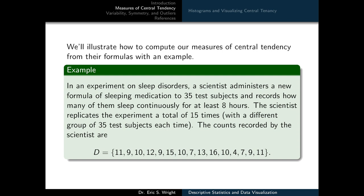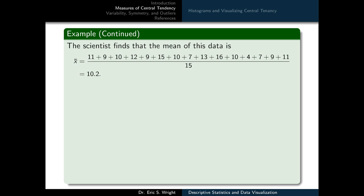We'll illustrate these measures with an example. In a sleep disorder experiment, a scientist administers sleeping medication to 35 test subjects and records how many sleep continuously for at least 8 hours, replicating the experiment 15 times. The dataset is d equals 11, 9, 10, 12, 9, 15, 10, 7, 13, 16, 10, 4, 7, 9, and 11. The mean is the sum of all values divided by 15, resulting in a mean of 10.2.